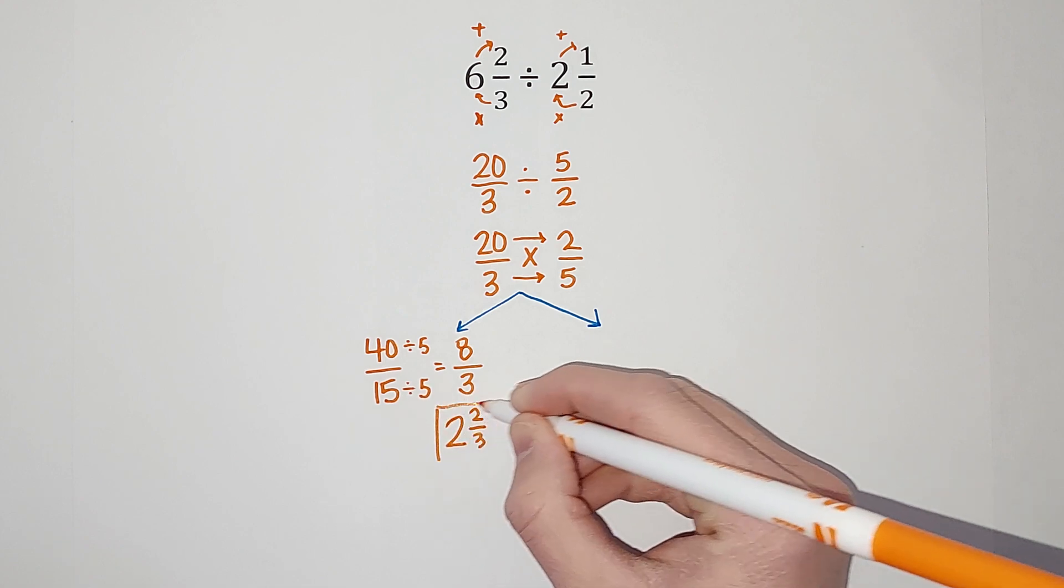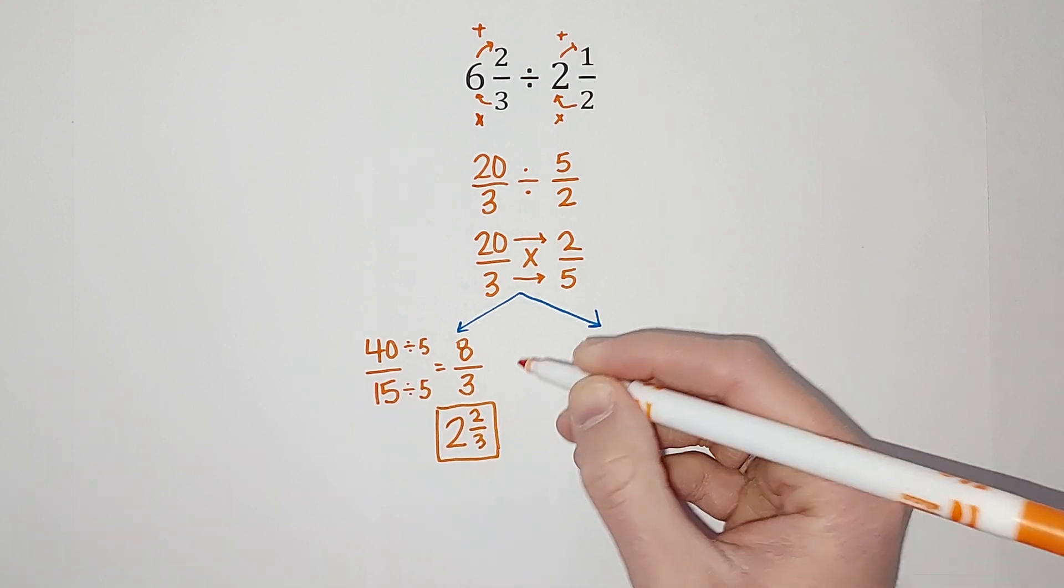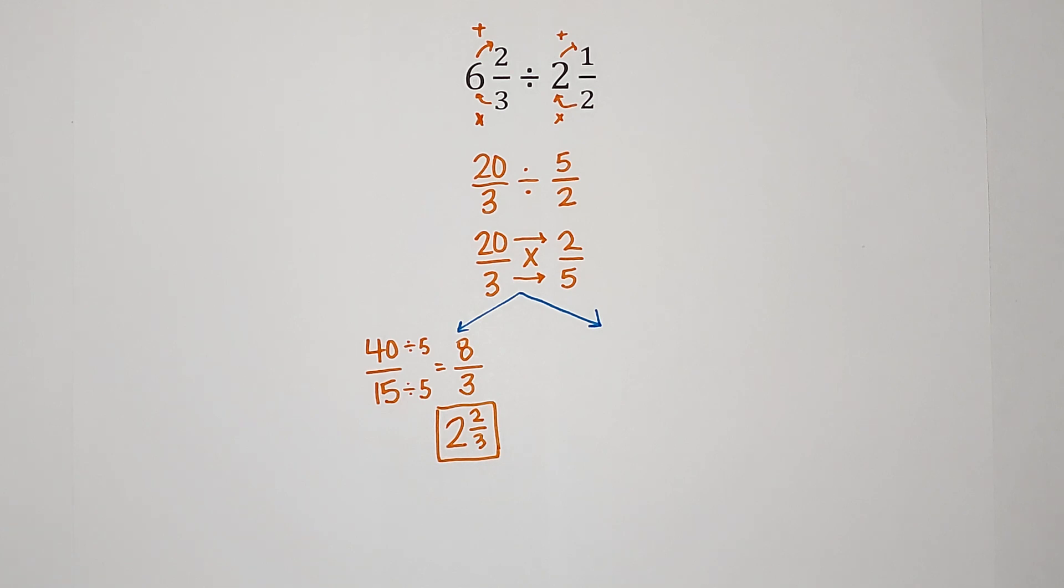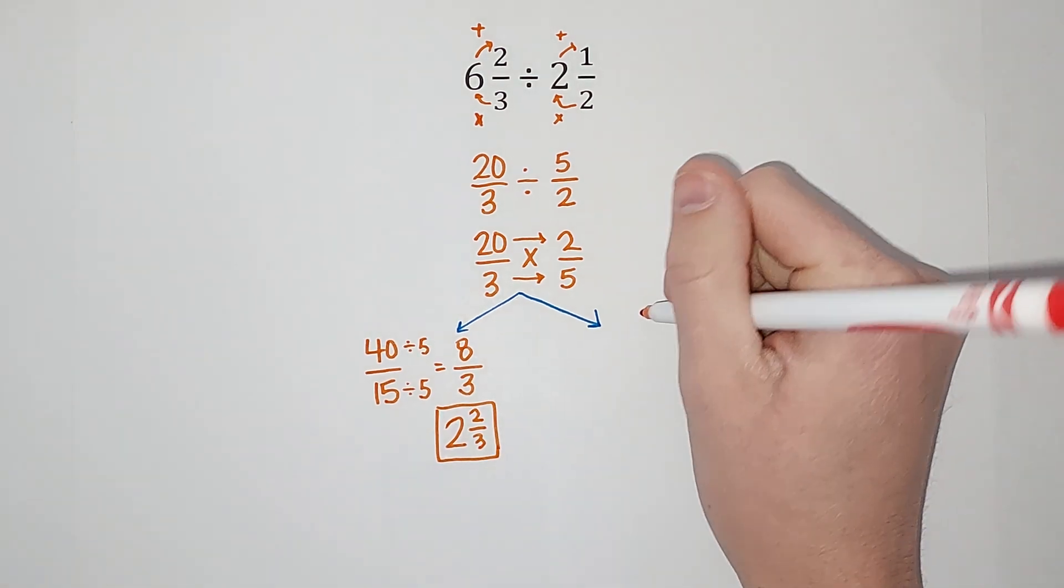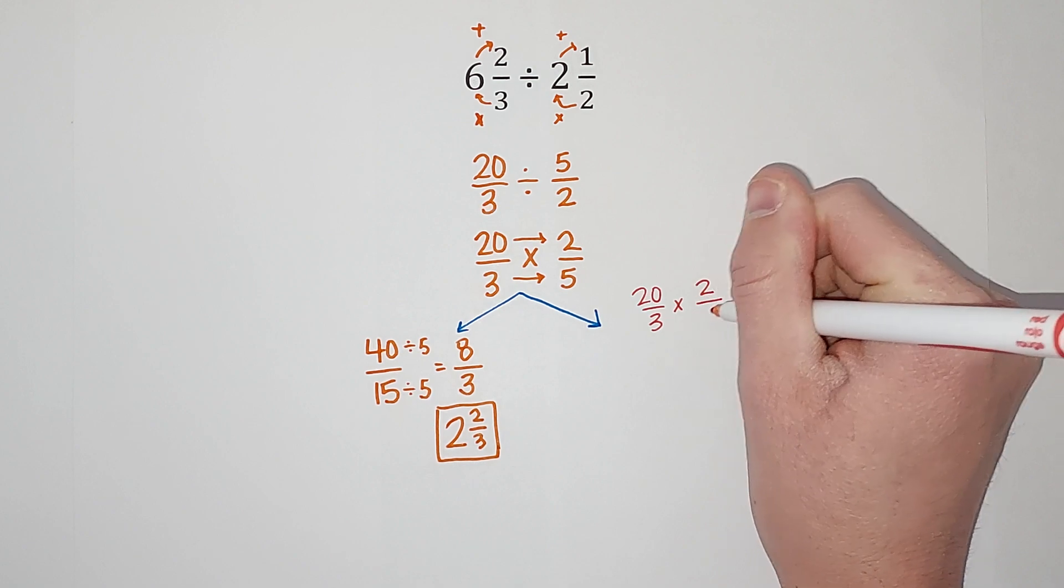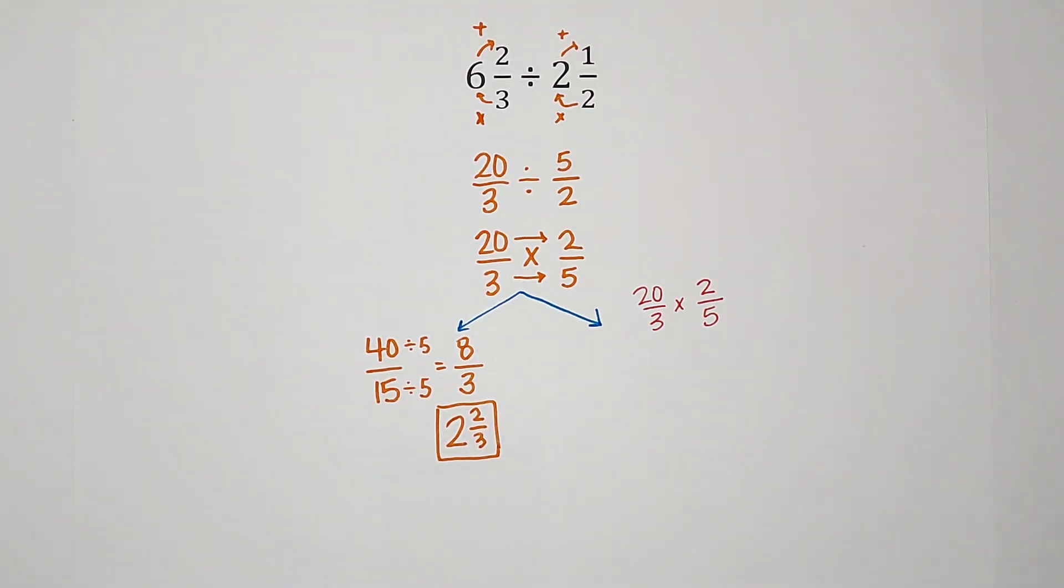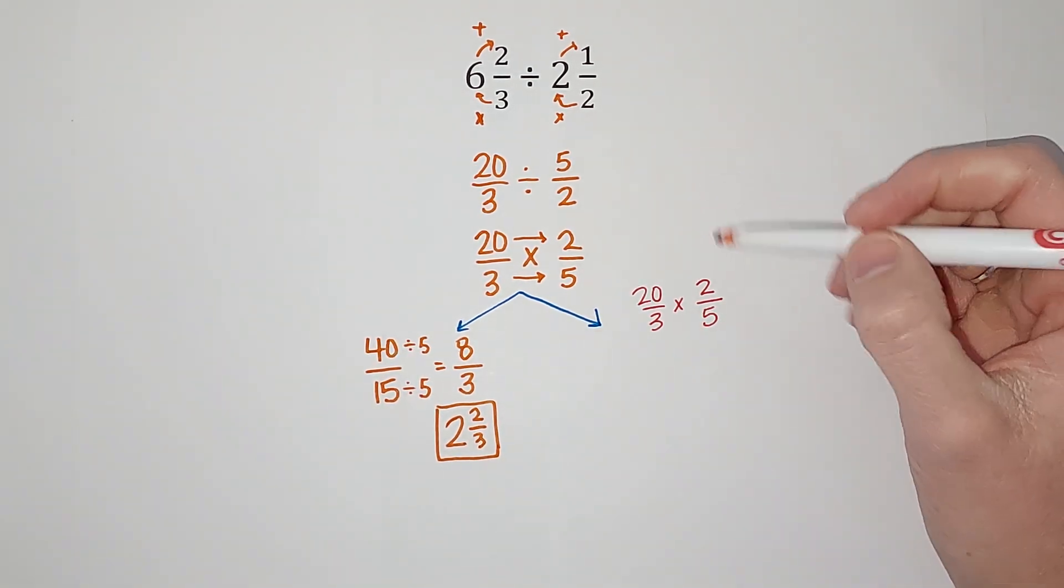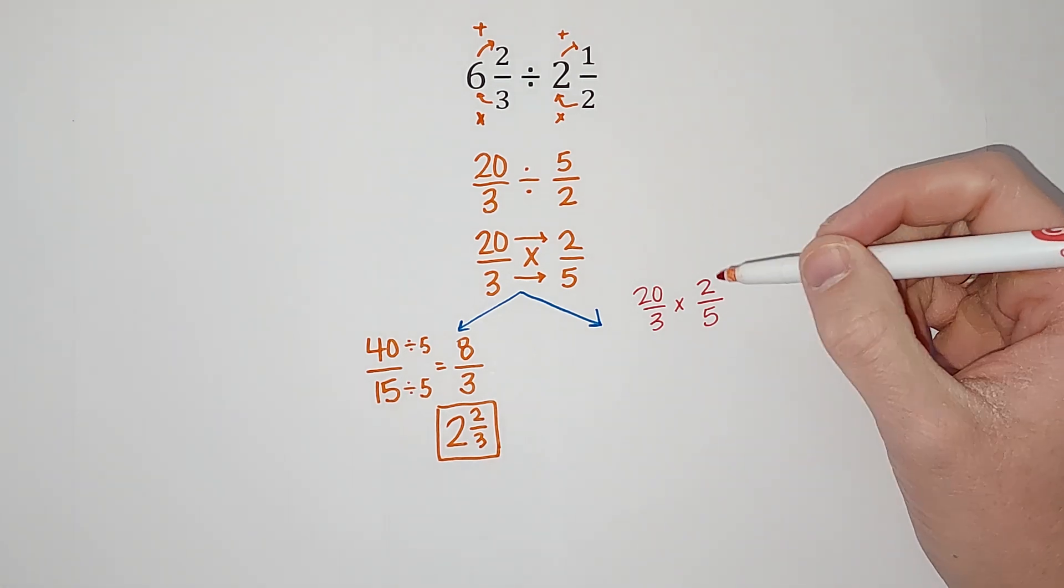All right, the other way to simplify this would be if I have my 20 thirds times 2 fifths, before you multiply fractions if you notice things that can simplify, you can simplify them before.